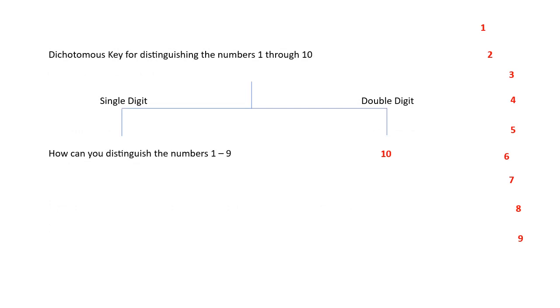So here we have our first division. Either it's a single digit or it's a double digit. If it's a double digit, you already have identified your 10 and that one's covered. Now the next question is how can we distinguish the numbers 1 through 9.